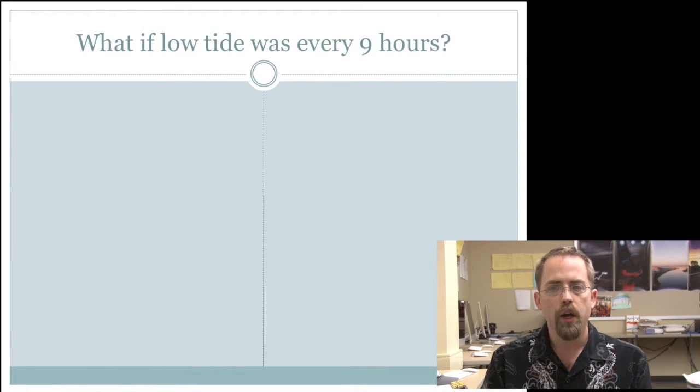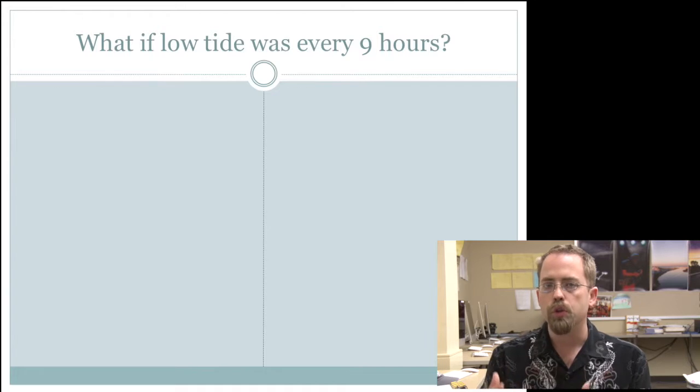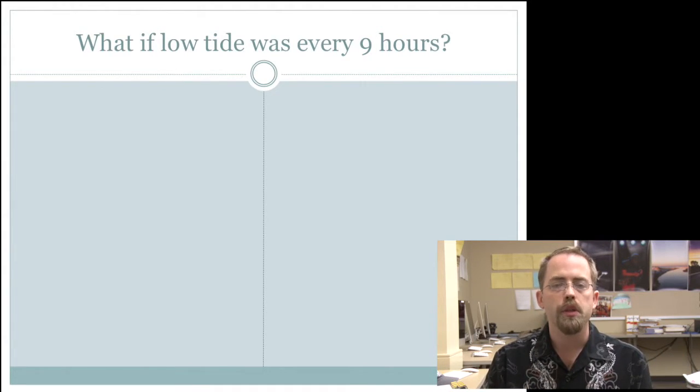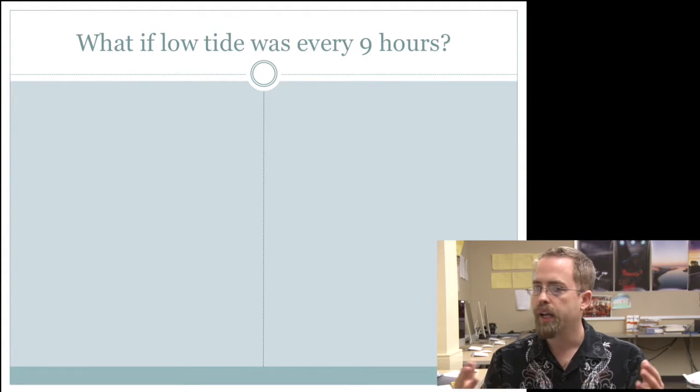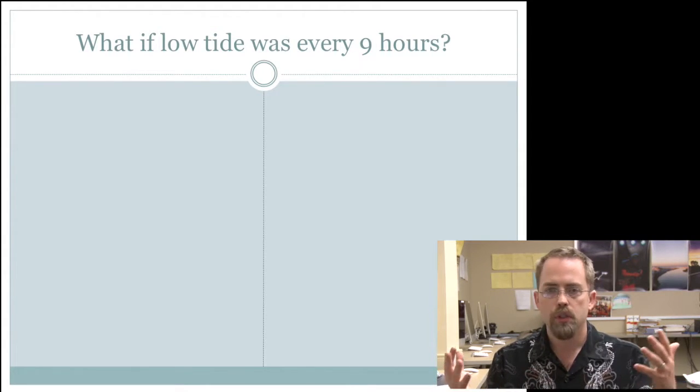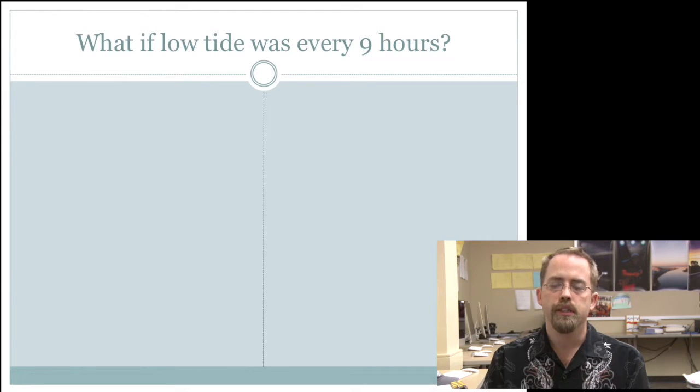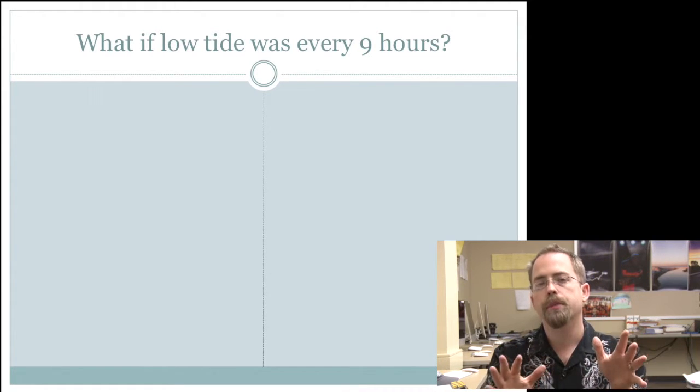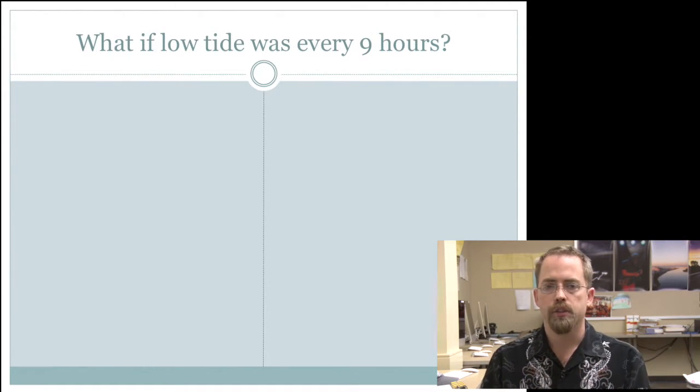So the question is, what if low tide was every nine hours? How would you use that then to be able to predict when you're going to be able to go to the beach and get cool shells? How often is low tide? How does that correspond then? How does that intersect with human life? Our 24 hour life that we live and nine hours, something happening every nine hours. How do those two get together? So pause the video, think about that, come back to that in just a second.